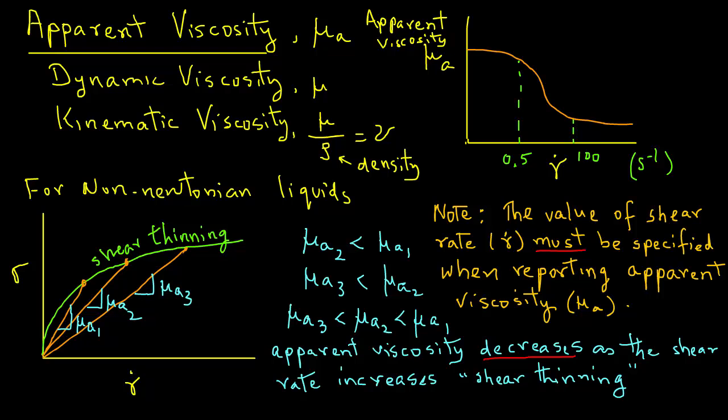This type of mistake should not be made. Anytime an apparent viscosity is given, the corresponding shear rate must also be given, since you can see from that plot that the apparent viscosity is very much dependent on the shear rate that is selected.